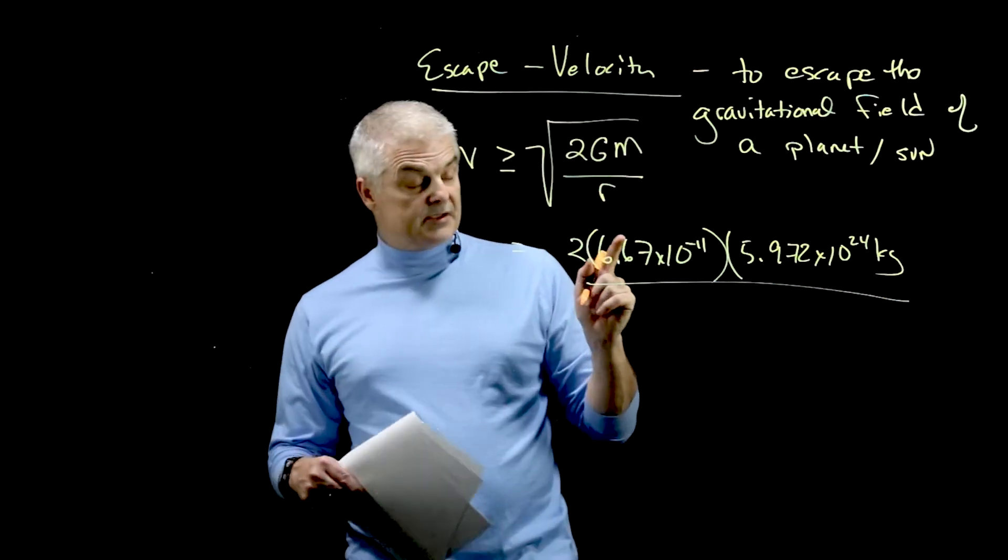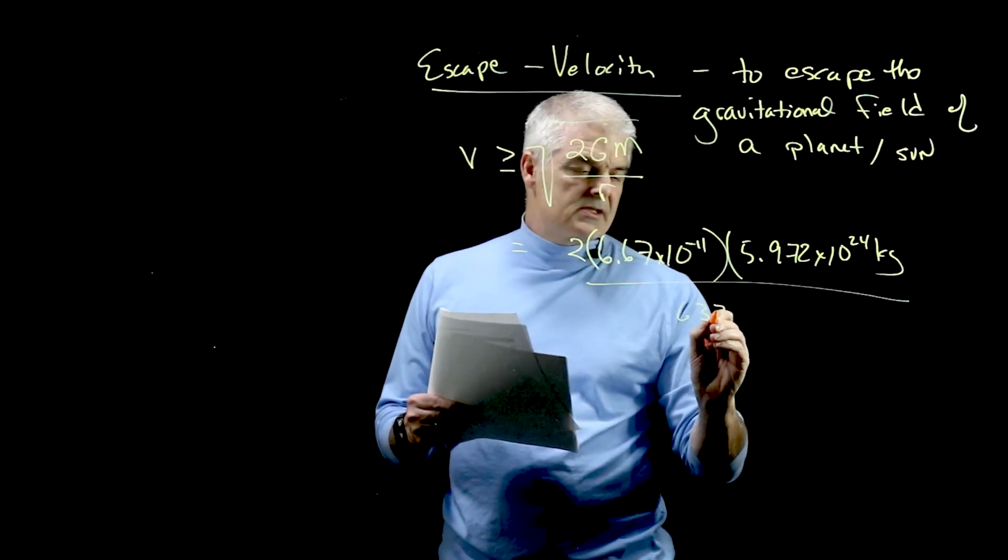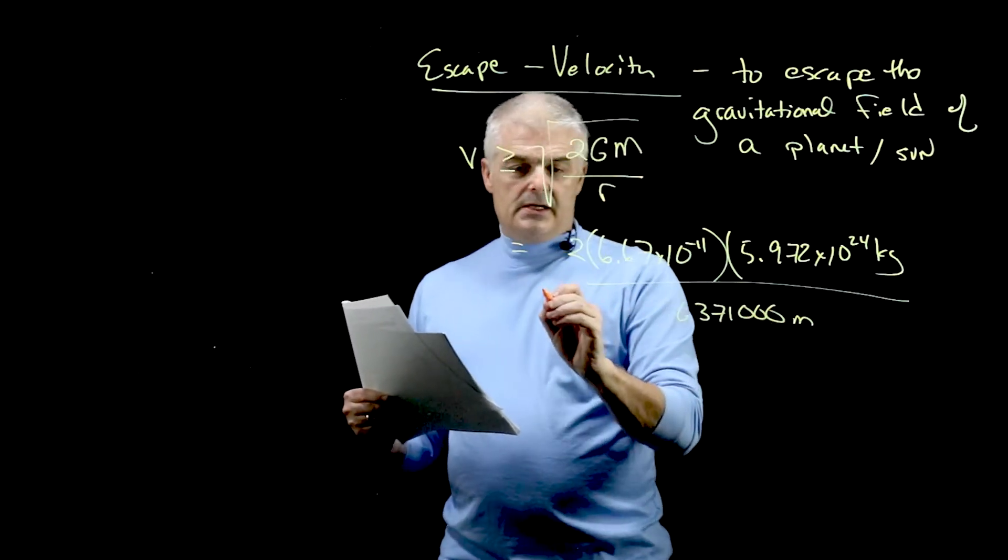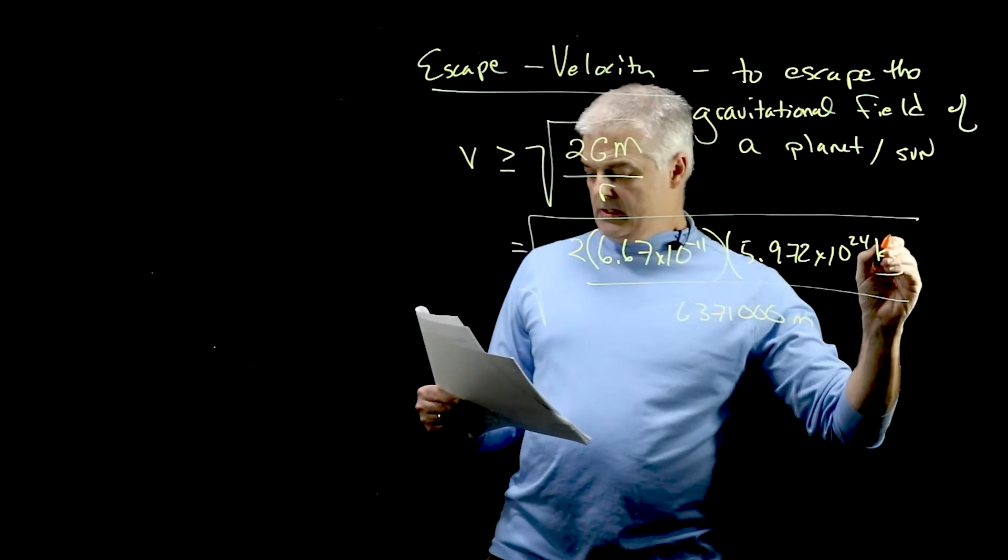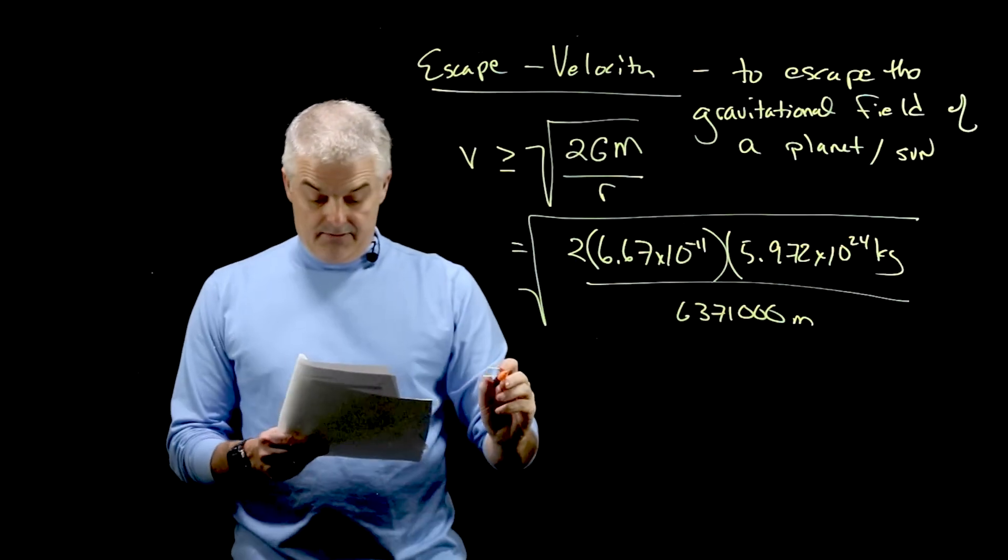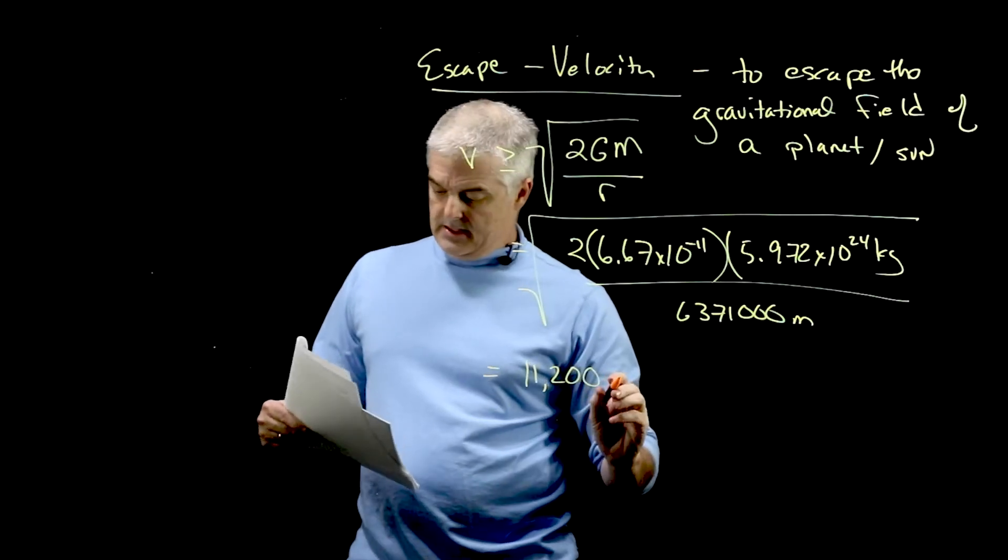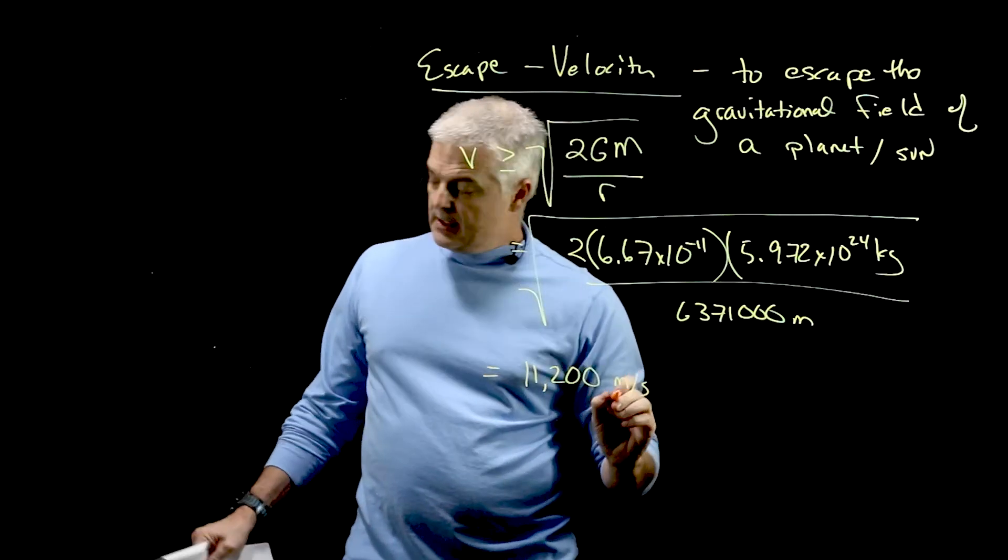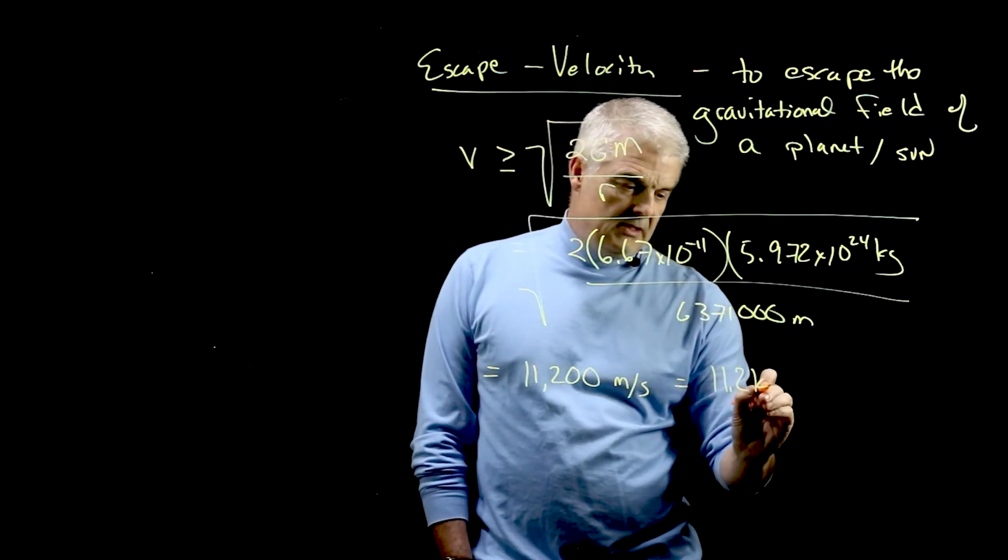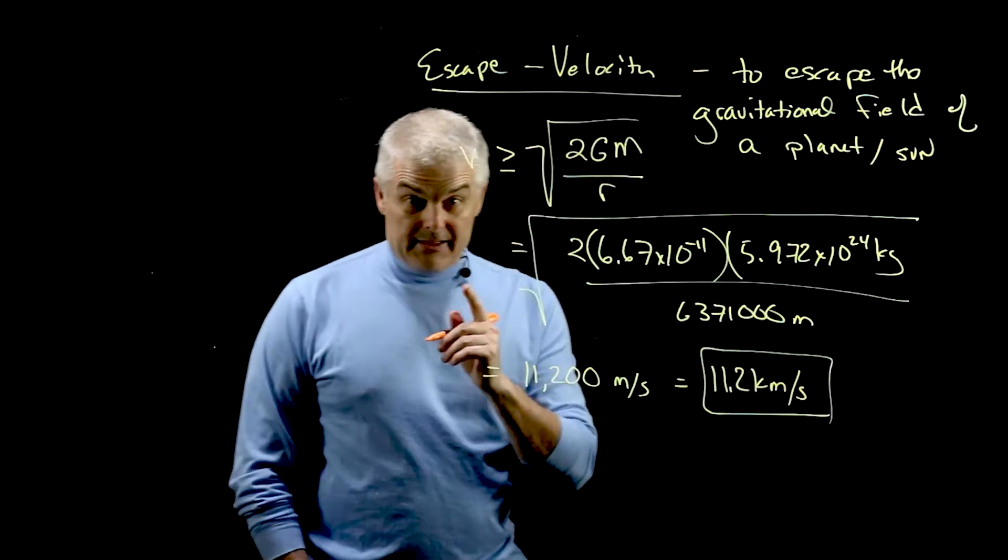divided by the radius of the earth in meters. Notice the problem says it in kilometers. I'm going to take 6,371,000 meters, and that's all in a square root. When you do this math, you get a pretty big number: 11,200 meters per second. Oftentimes I will say it this way: 11.2 kilometers per second.